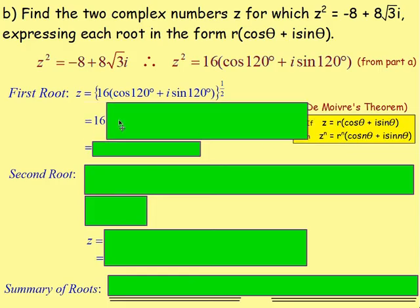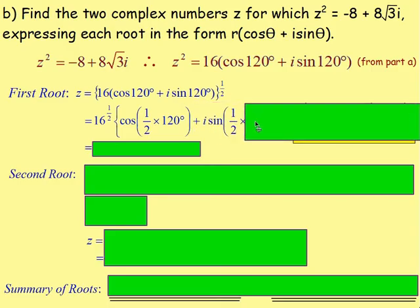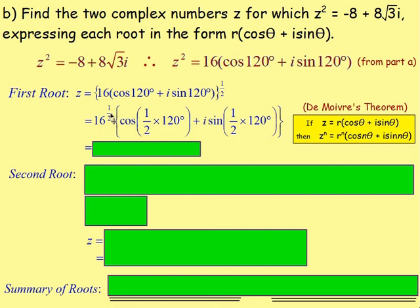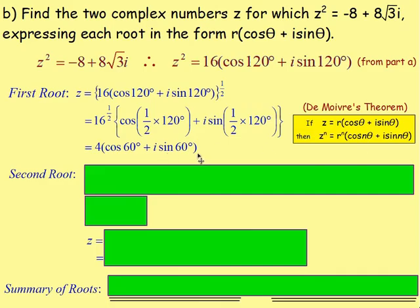Take the modulus 16 to the power of one half, and multiply the argument by one half: cos(½×120) + i·sin(½×120). The square root of 16 is 4, and ½×120 = 60, so the first root is 4(cos60 + i·sin60). There is a quicker way to find the second root — remember the roots are evenly spaced around the circle.